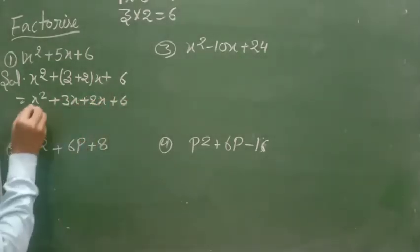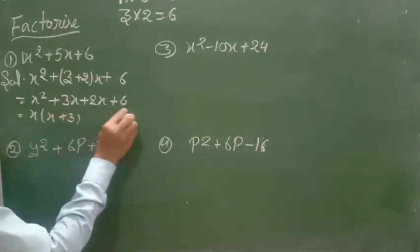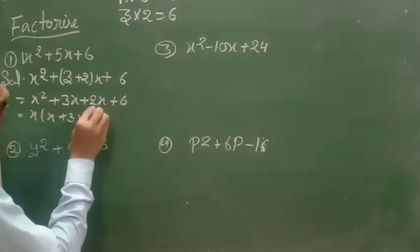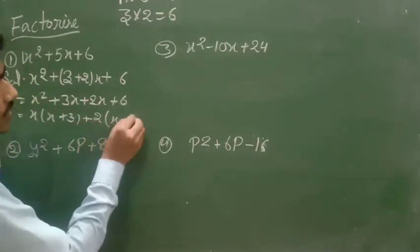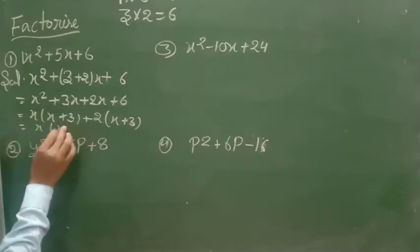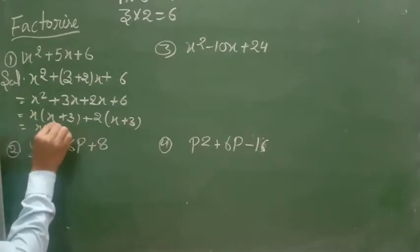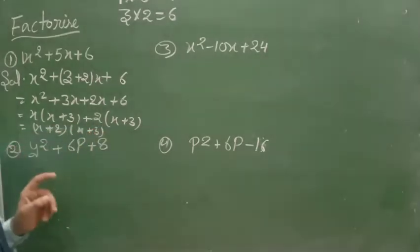And you will take the common. Here x, x + 3. And here you will take common 2. 2 and 6 divisible by 2. x(x + 3) + 2(x + 3).